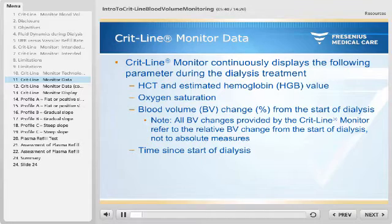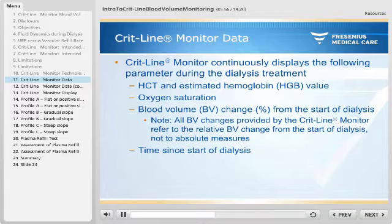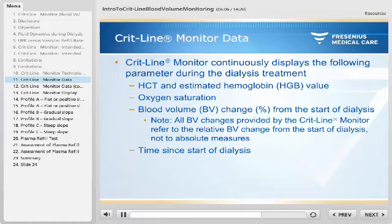The CRITLINE monitor is attached to the dialysis machine and continuously displays the following parameters during dialysis treatment: hematocrit, estimated hemoglobin value, oxygen saturation, and blood volume change in percent from the start of dialysis. All blood volume changes refer to the relative blood volume change from the start of dialysis, not to absolute measures. The monitor also shows the time elapsed since the start of dialysis.